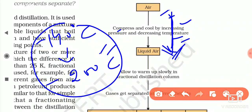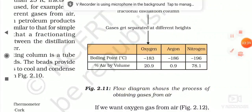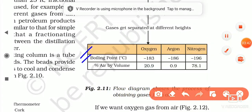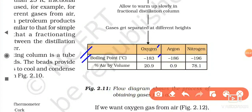Once we have liquid air, all the gases are present in liquid form. We then slowly warm the liquid air, and the gas with the lowest boiling point evaporates first, similar to distillation. The boiling points are: oxygen −183°C, argon −186°C, and nitrogen −196°C.